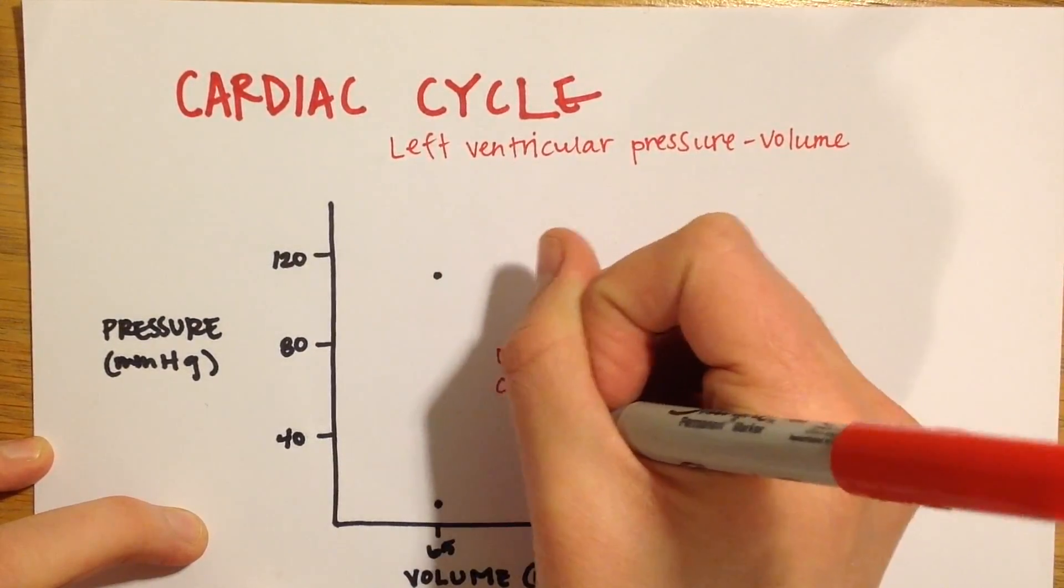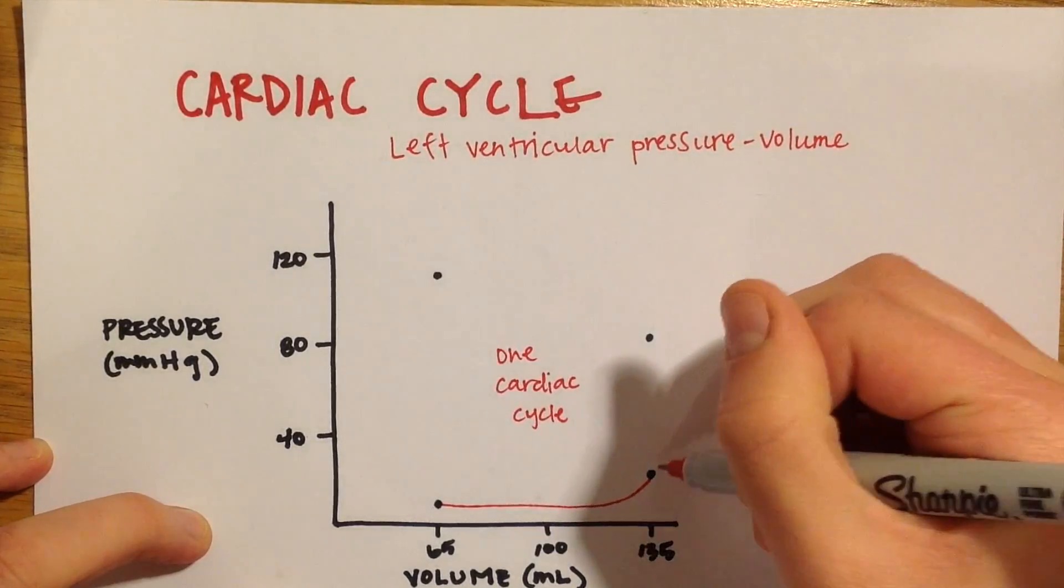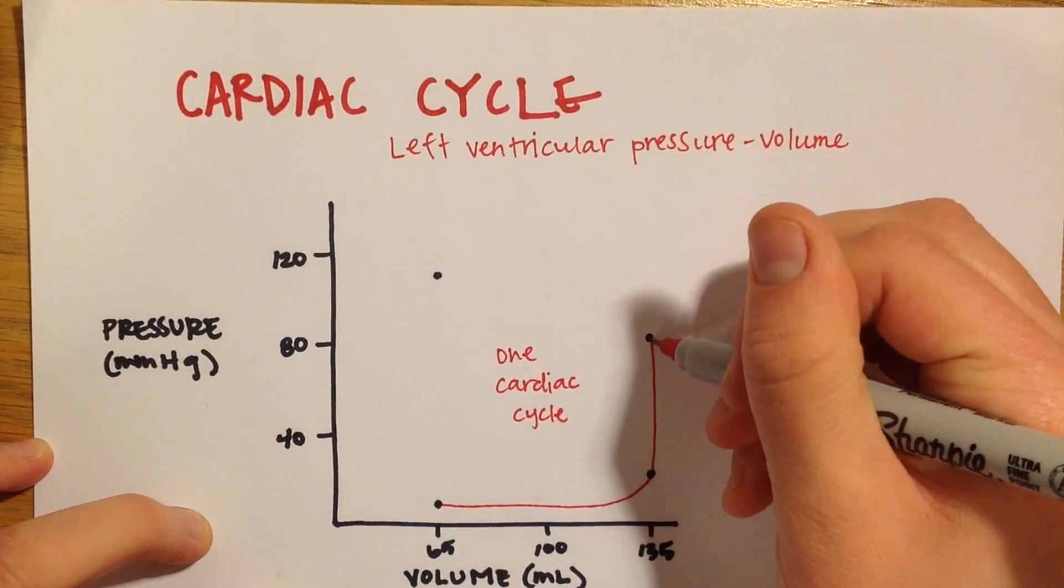During late diastole, both sets of chambers in the heart are relaxed and the ventricles fill passively with blood. Then when the atria contract during atrial systole, they force a small amount of additional blood into the ventricles. That's why the line is curved.